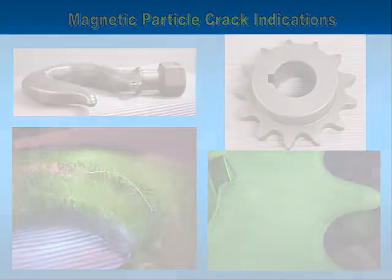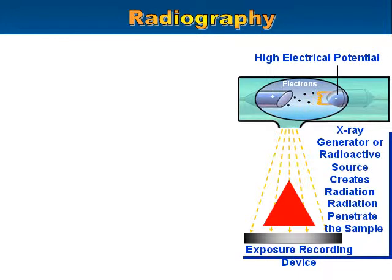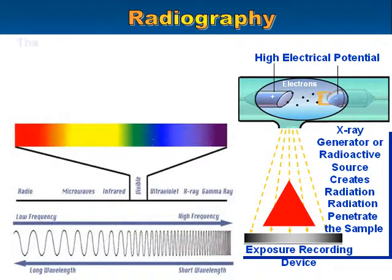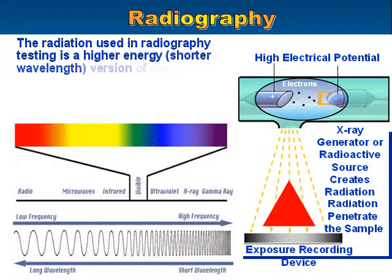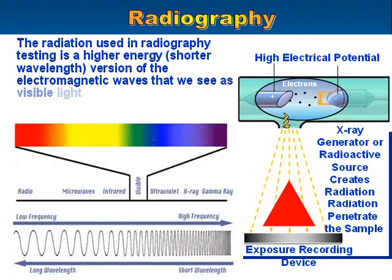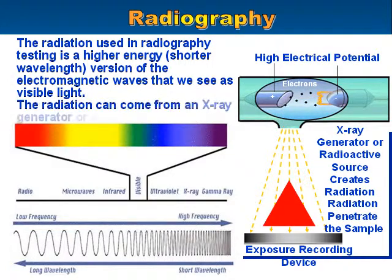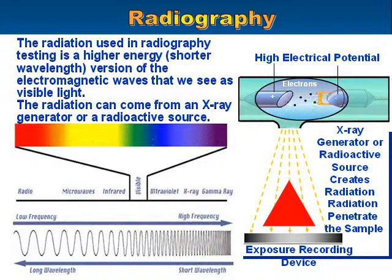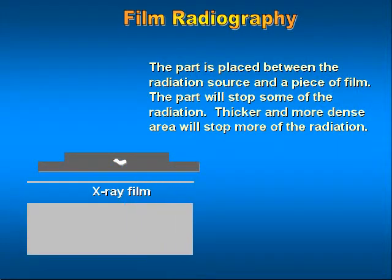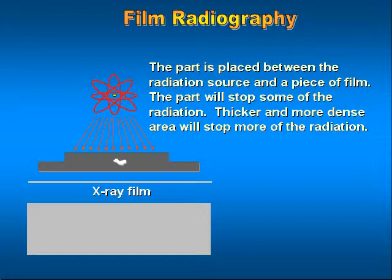The radiation used in radiography testing is a higher energy, shorter wavelength version of the electromagnetic waves that we see as visible light. Note that radiation can come from an X-ray generator or a radioactive source. With film radiography, the part is placed between the radiation source and a piece of film, and the part will stop some of the radiation.